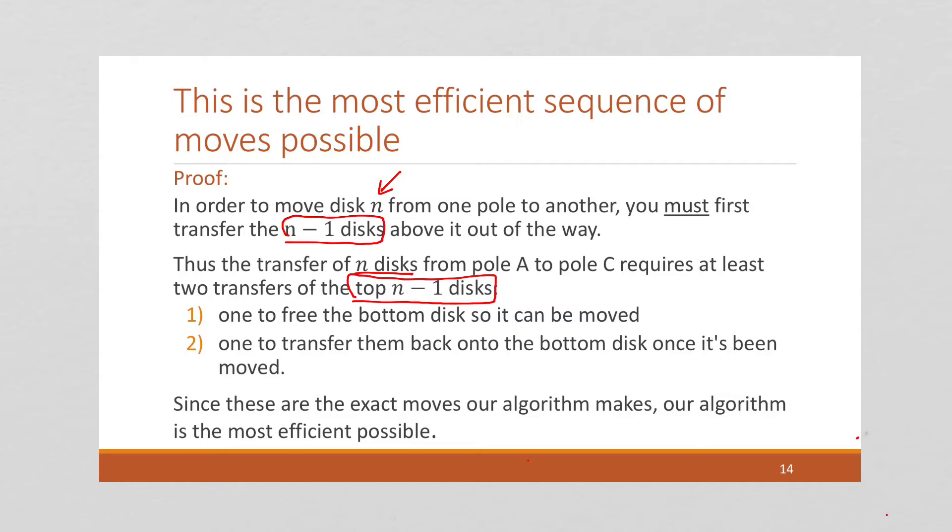We need to move that top n minus 1 disks the first time so that we can free up that bottom disk to be moved to pole C. And then we need to move that top n minus 1 disks the second time to put them onto pole C on top of that bottom disk. And as these are the exact moves our algorithm makes, our algorithm is the most efficient algorithm possible.